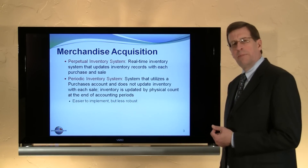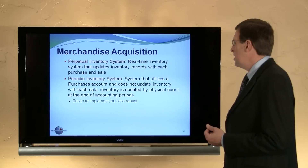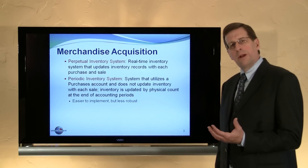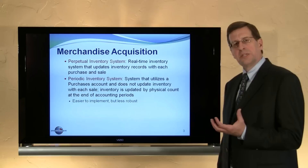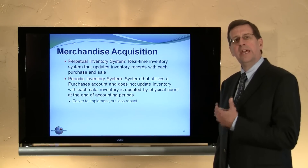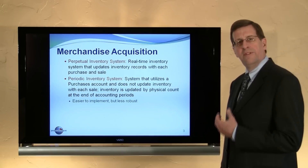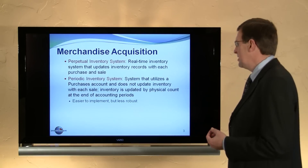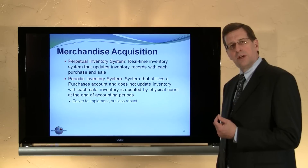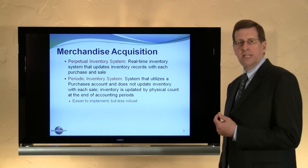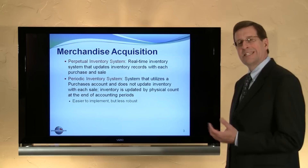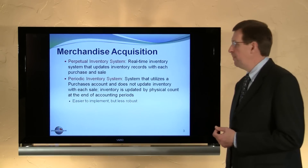Contrast this to the periodic system we've seen in previous modules. Under that system we utilized a purchases account. We recorded purchases into the purchases account as they occurred — we did not update inventory until the end of the accounting period via the closing process. With a periodic system, to determine what inventory was on hand at any point in time, it was necessary to take a physical count of goods. That's not necessary with a perpetual inventory system.